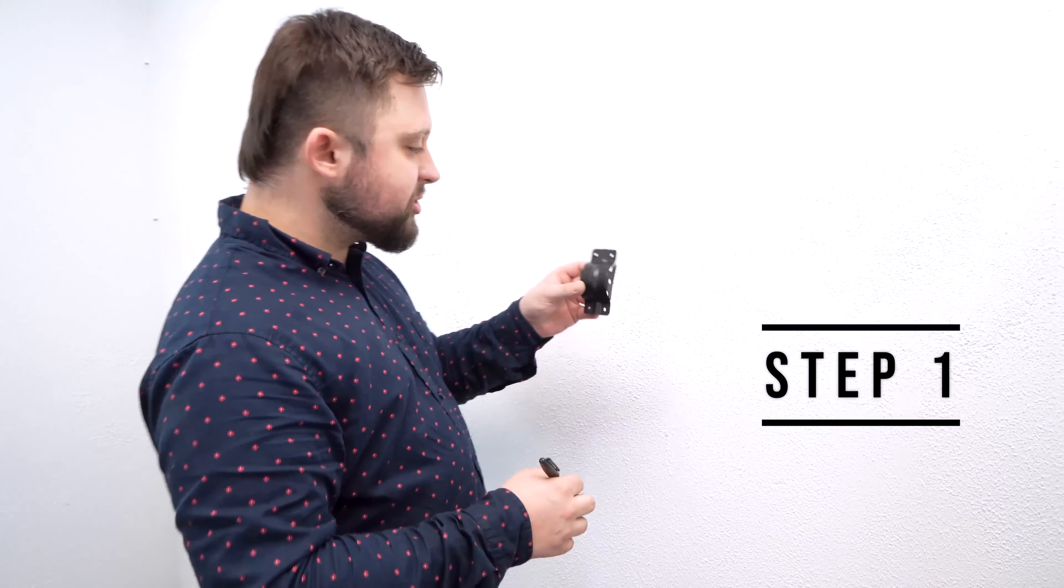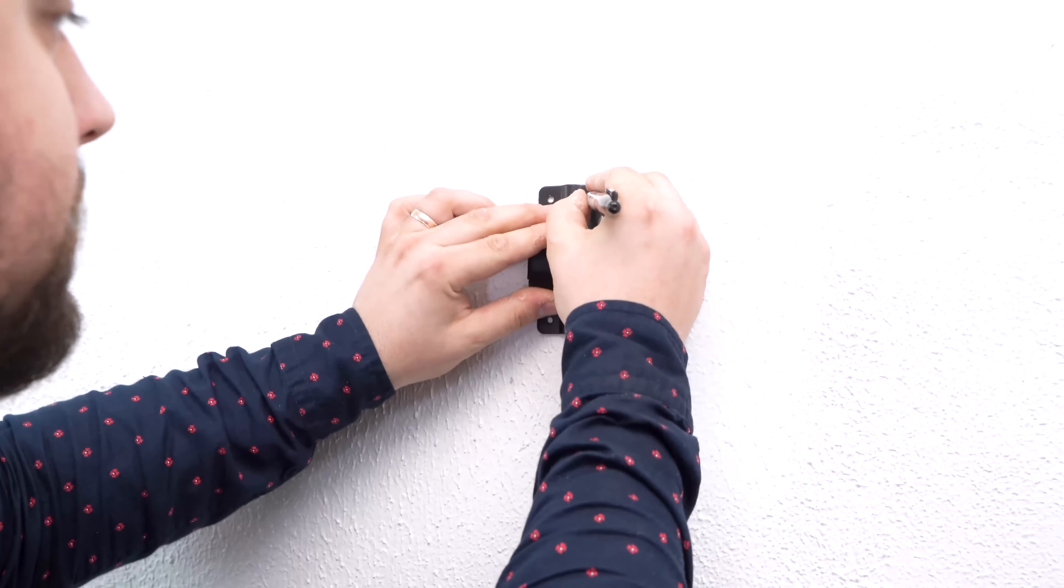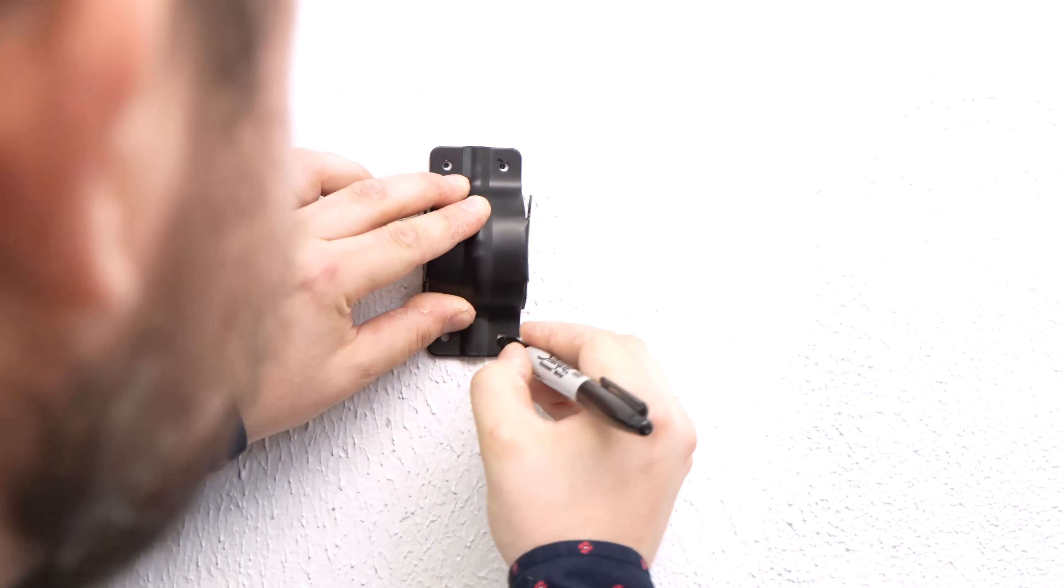Alright, so the first step using the wall bracket we're going to mark the actual location of the speaker on the wall using the bracket as a template.